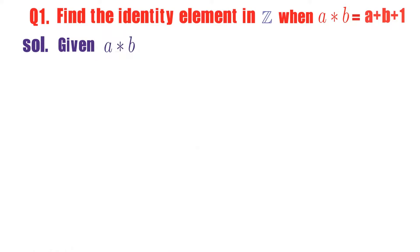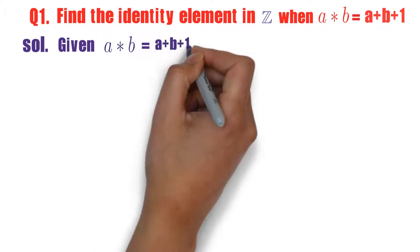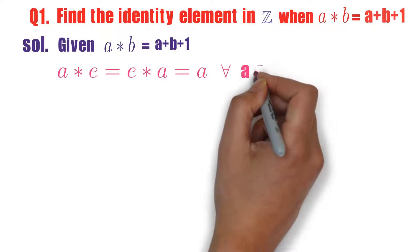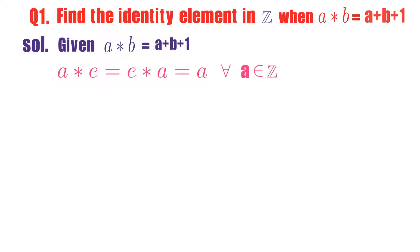Observe this: a plus b plus one, that's first element plus second element plus one. We know that a star e equals e star a equals a for any a belongs to Z. This is the identity property. First I will calculate a star e.